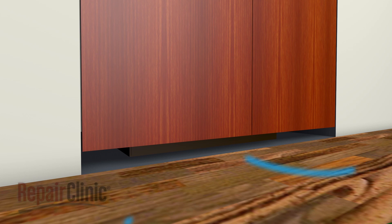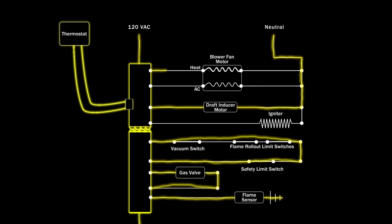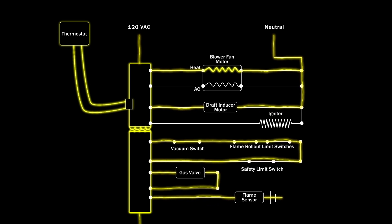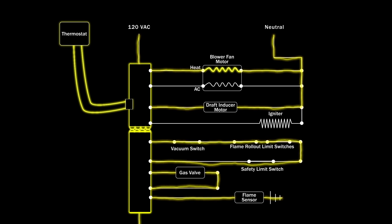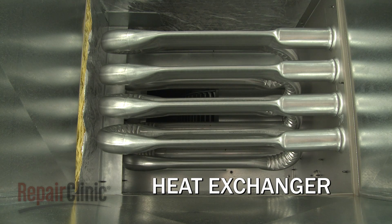Once the combustion process is complete, the control board will send 120 volts to the circulation blower fan motor. The blower fan draws air through the return vent, blows it past the heat exchanger, and forces it through the home's venting.